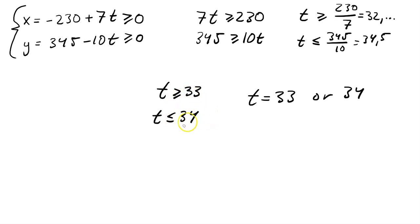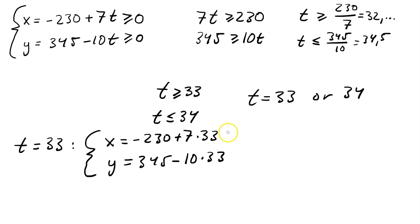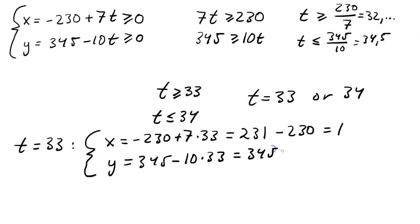For t = 33: x = −230 + 7 × 33 = −230 + 231 = 1, and y = 345 − 10 × 33 = 345 − 330 = 15. So one solution is 1 A-ball and 15 B-balls.